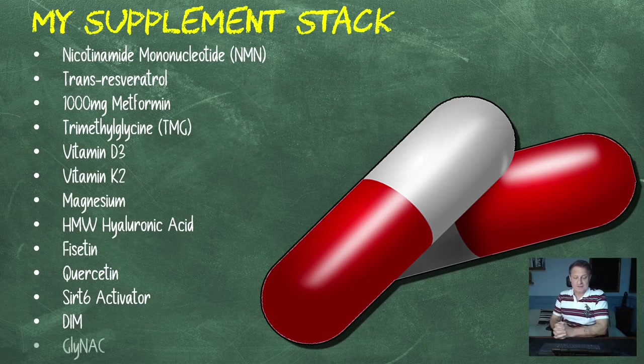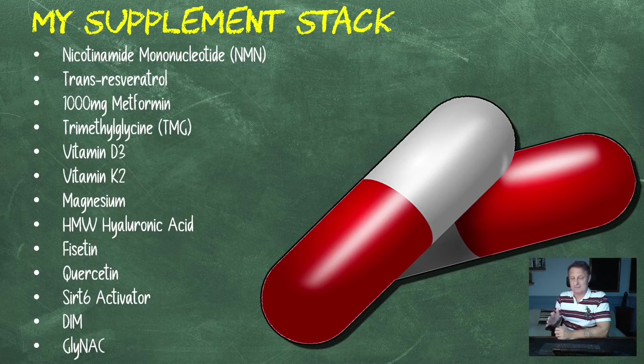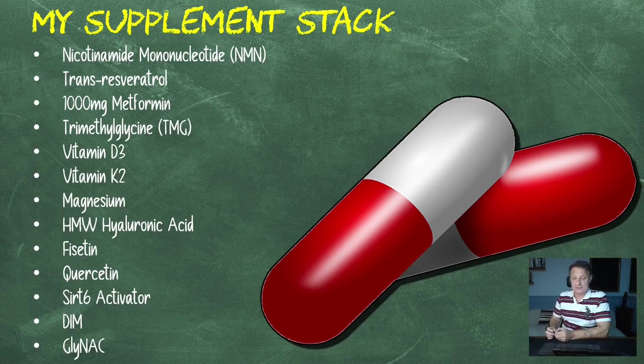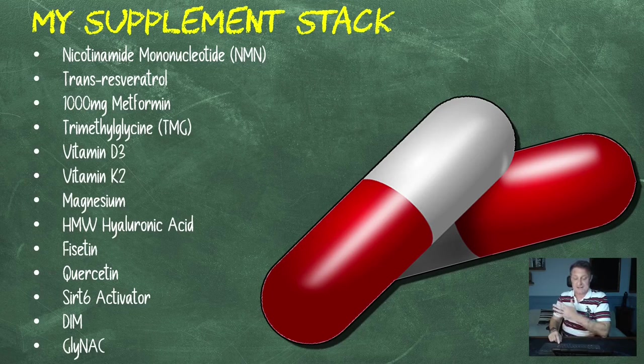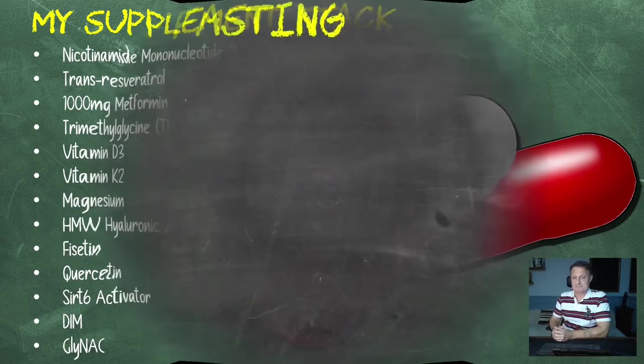I take the majority of my supplements between 6:30 and 7 in the morning when I wake up. My DIM is split into three separate doses: 200 in the morning, 200 between 11 and 12, and the last dose with my second 500 milligrams of metformin at 9:45 or 10, just when I'm getting into bed. I take my resveratrol with full-fat yogurt around 8 p.m. at night. That's it for the supplements I take.